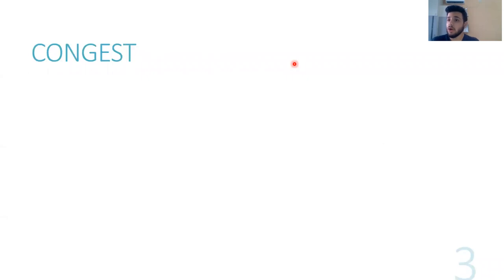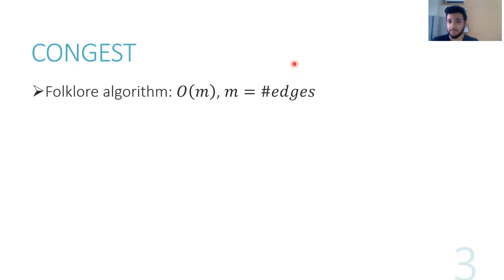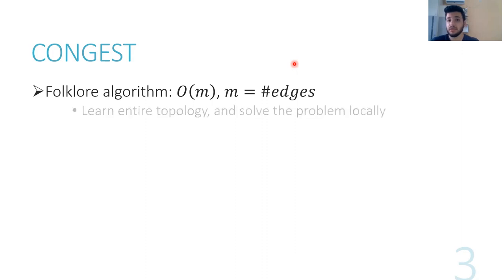Our complexity measure is going to be the amount of rounds. To give some context, there is an algorithm that can solve any natural graph problem in O(M) rounds, where M is the number of edges in the graph. This algorithm is simple: you make all nodes learn the entire topology of the input graph, and then each node can solve the problem locally.